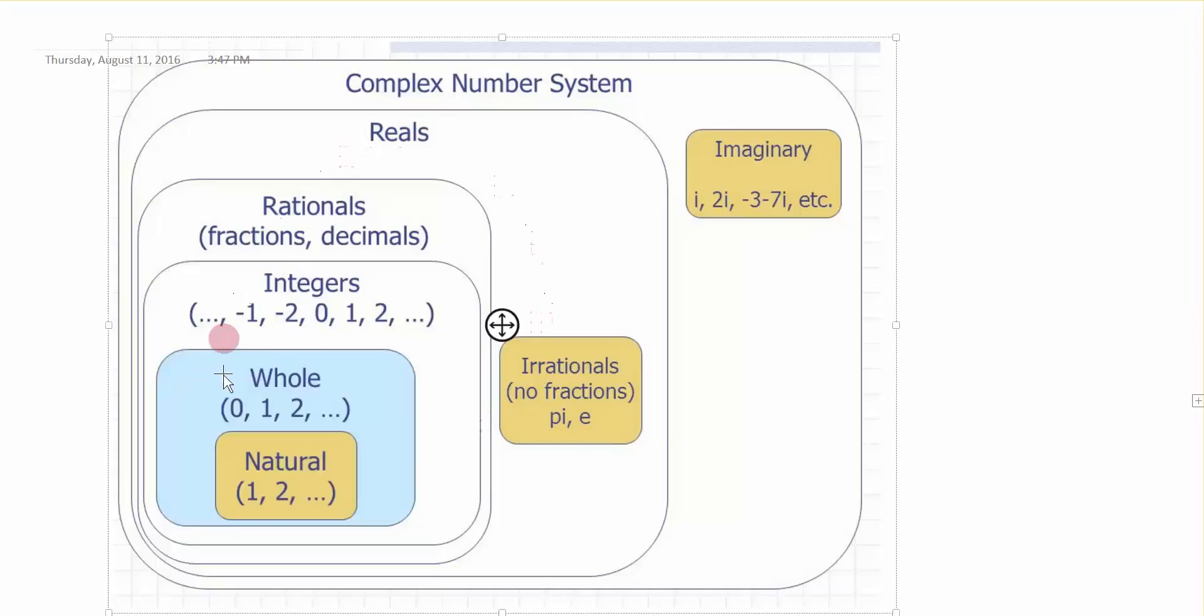All of these numbers contained within this rectangle of reals are the numbers you've been dealing with for the most part. Now, we have a complex number system, which is comprised of both real numbers and this other component over here: the imaginary numbers.